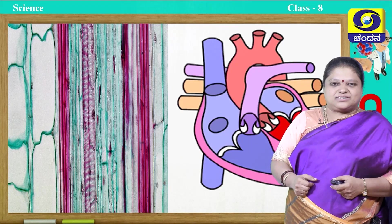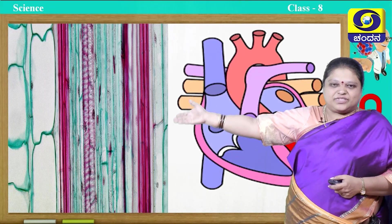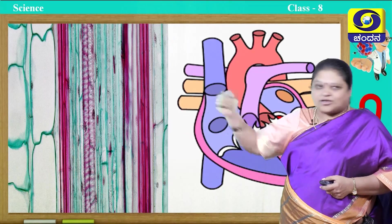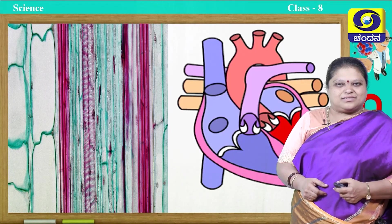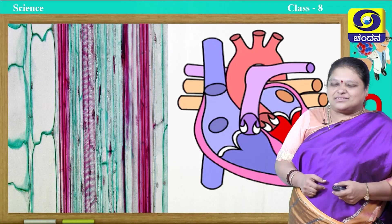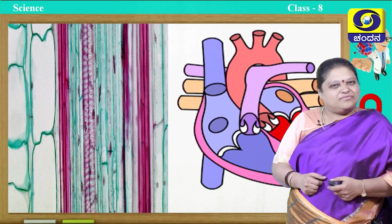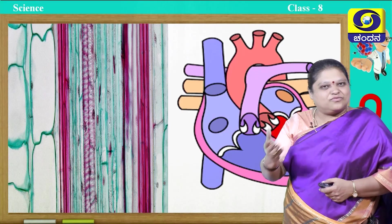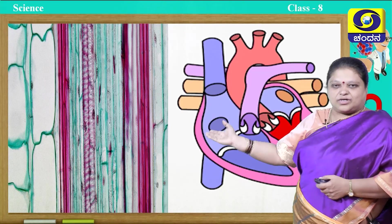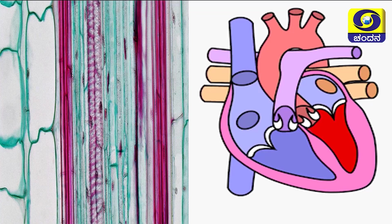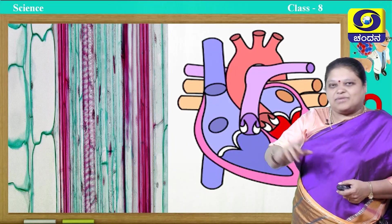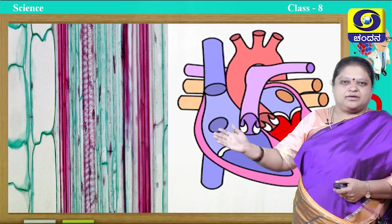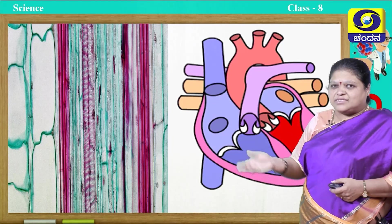Next, if you look at the transport system — in the first picture you can see lots of tissues: xylem and phloem are present. Xylem will conduct water, phloem will conduct food. What about this one? Heart. Heart will pump the blood and supply blood to all parts of the body. So, the circulatory system is there.